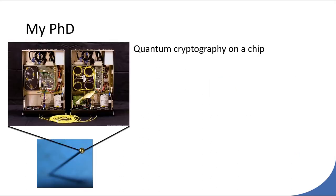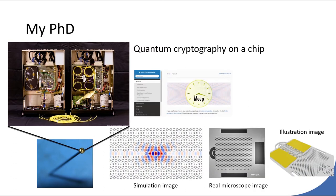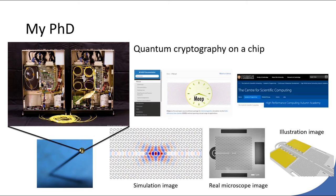The aim of my PhD was to miniaturize a typical quantum cryptography system from a suitcase size to a chip size. I spent a lot of my time designing the chip using an open source software called MEEP, and that's when I started to appreciate the importance of open source software. I participated in a two-week autumn academy for high-performance computing at the University of Cambridge, which was useful for simulating my chip on the Arcadia supercomputer at Lancaster. My modeling work led to a journal publication and a patent.